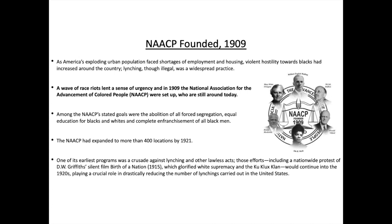One of the NAACP's earliest programs was a crusade against lynching and other lawless acts. Those efforts included a nationwide protest of D.W. Griffith's silent film 'Birth of a Nation', which glorified white supremacy and the Ku Klux Klan, and would continue into the 1920s, playing a crucial role in drastically reducing the number of lynchings carried out in the United States. So they were seeing progress from their actions, albeit very small and slow.